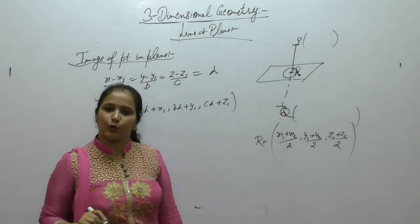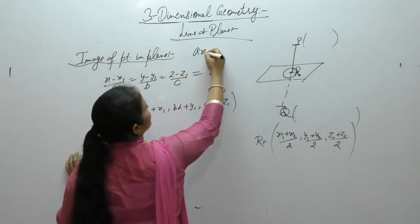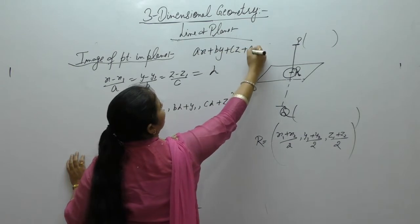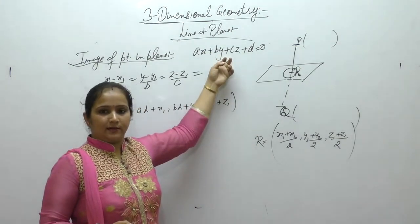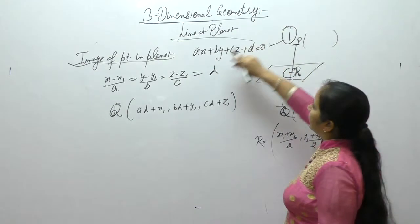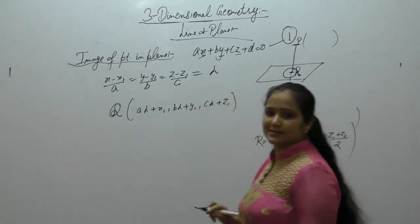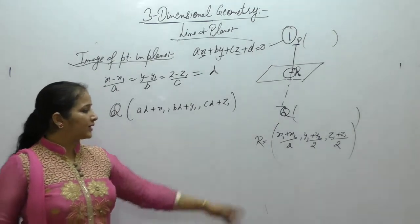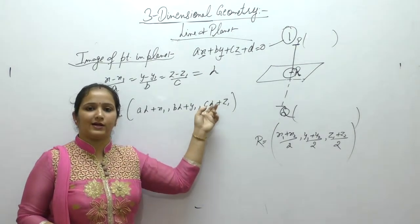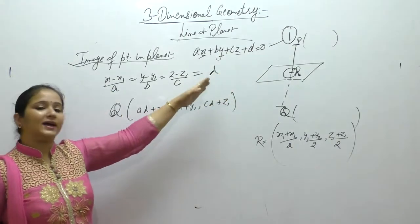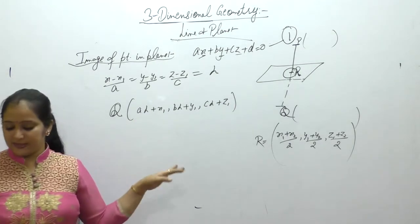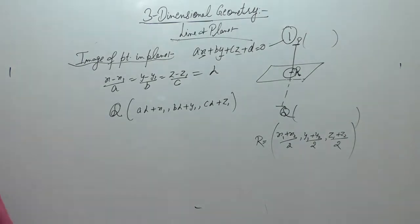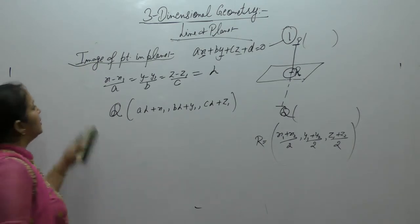This is R point, which lies on the plane. Plane's equation we have of this type: AX plus BY plus CZ plus D is equal to 0. Whatever R's coordinates we got, put it here. After putting here, we will put value of X, Y and Z. When we put X, Y, Z values, then we will get lambda's value. So, after lambda value comes, put in this equation. Then we will get coordinates of Q. It means image of point P.